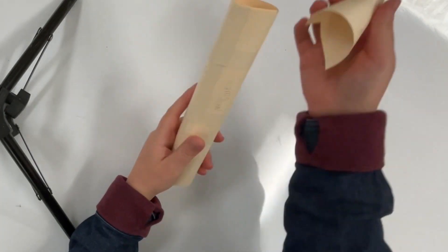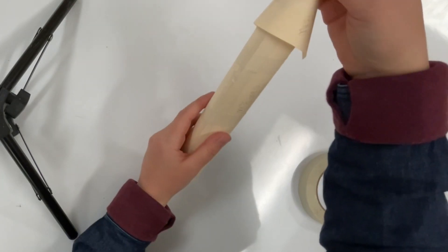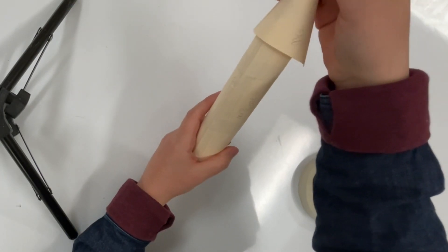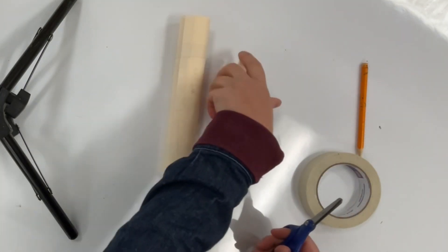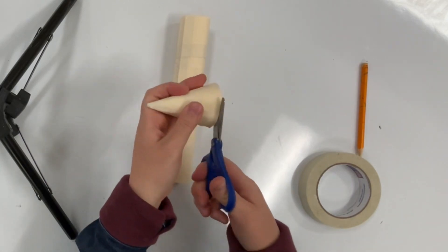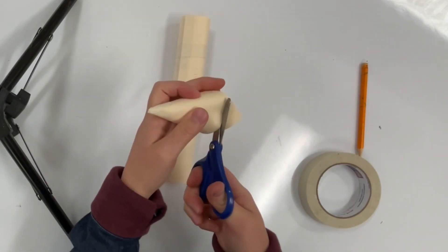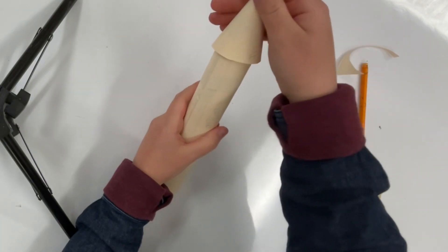Now I want to put the tip on top of the pencil, but right now it looks weird because the cone is all uneven—it doesn't really fit very well. So I'm going to take some scissors and just trim around the bottom of the cone so that it's more even. You just get that excess paper off the bottom. Now it still fits a little weird on top of the tube.